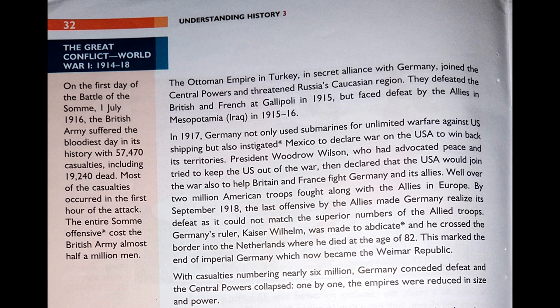The Ottoman Empire, in secret alliance with Germany, joined the Central Powers and threatened Russia's Caucasian region. They defeated the British and French at Gallipoli in 1915 but faced defeat by the Allies in Mesopotamia (Iraq) in 1915 to 1916. In 1917, Germany not only used submarines for unlimited warfare against US shipping but also instigated Mexico to declare war on the USA to win back its territories. Instigated means to bring about or initiate an action or event.